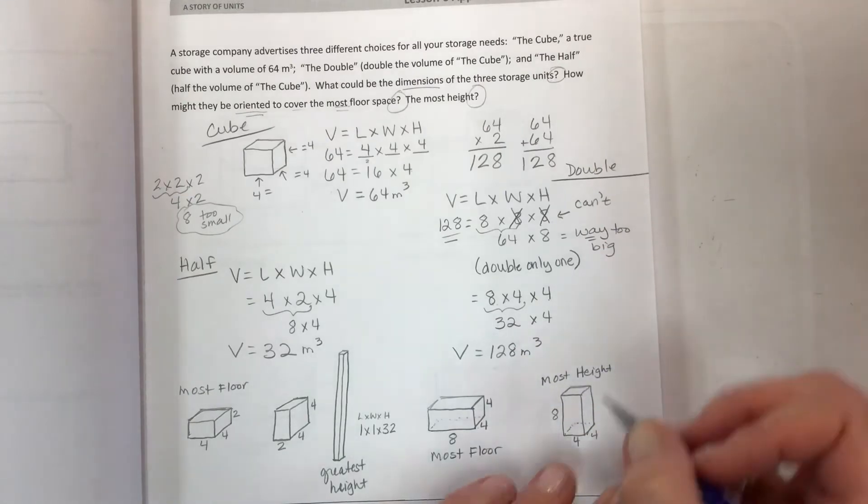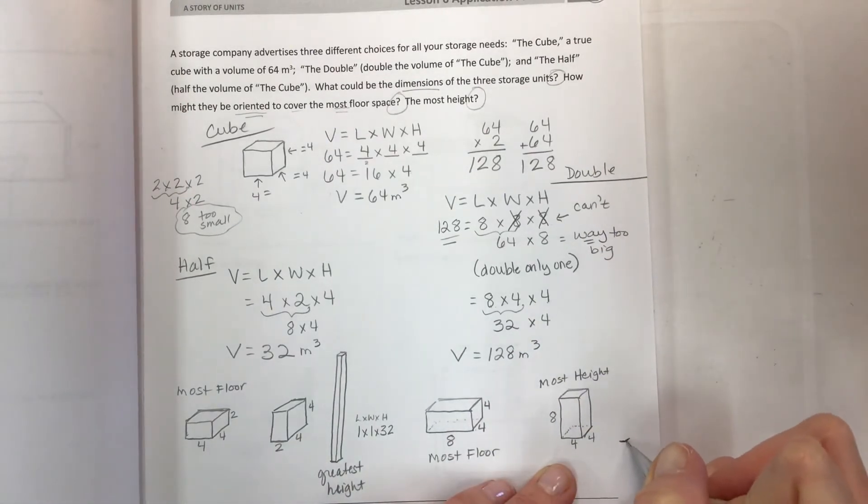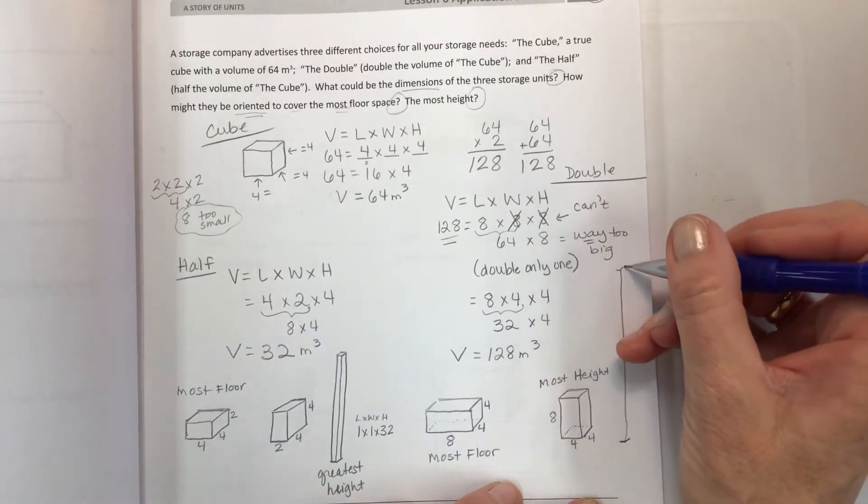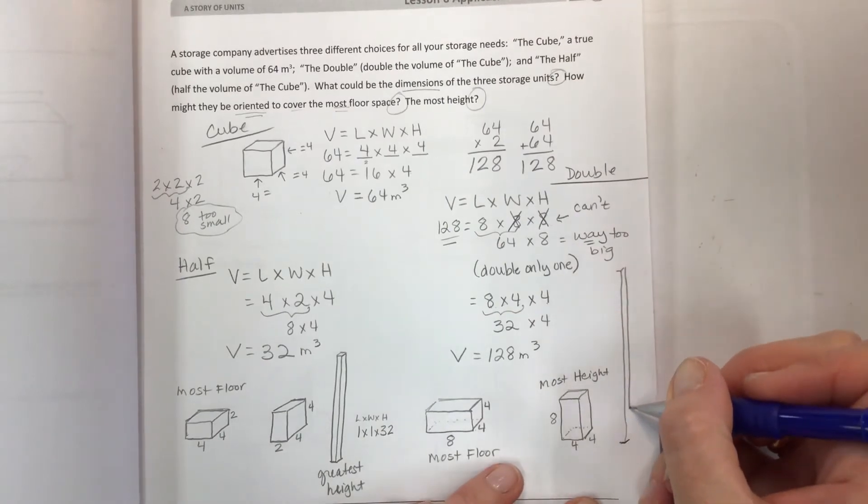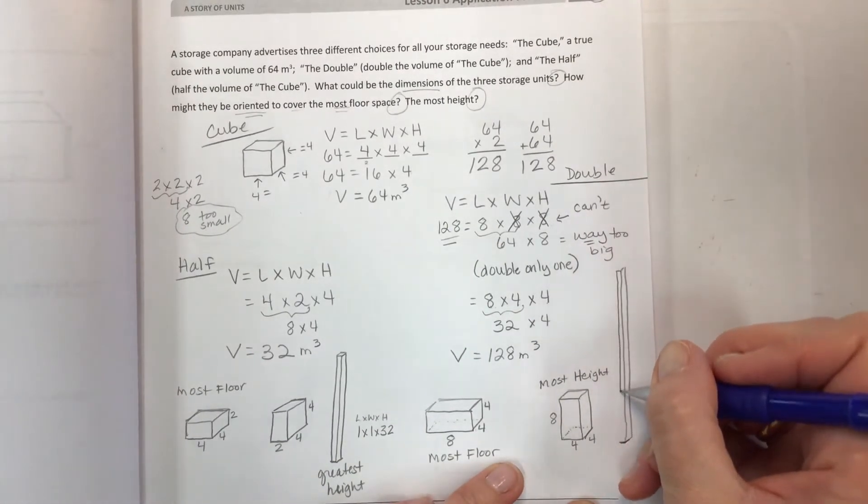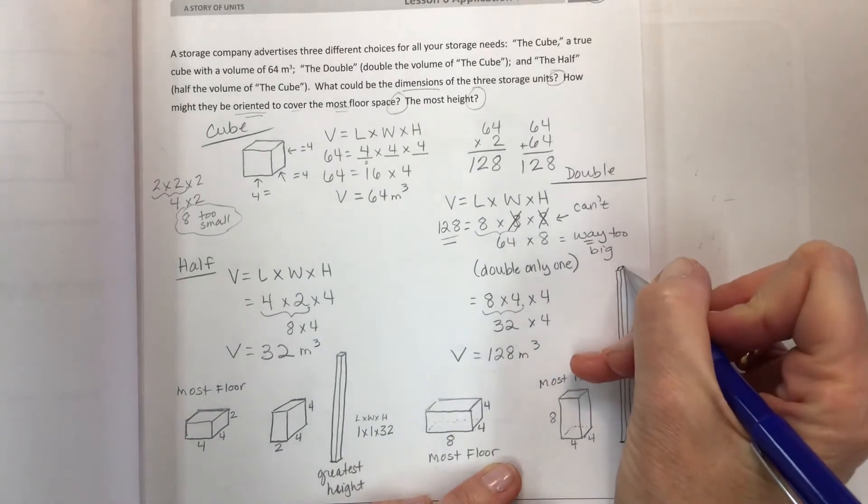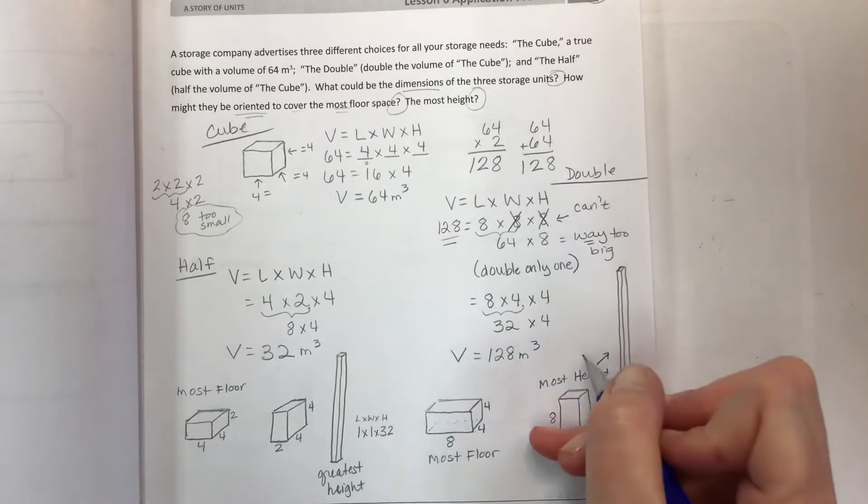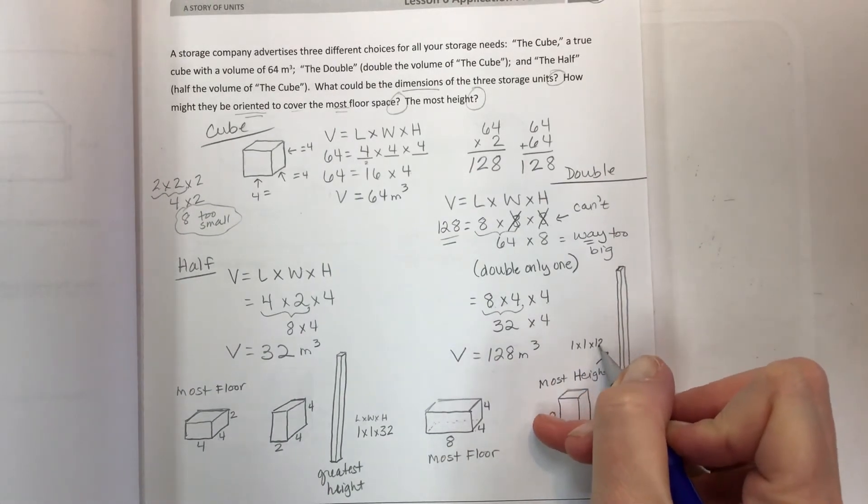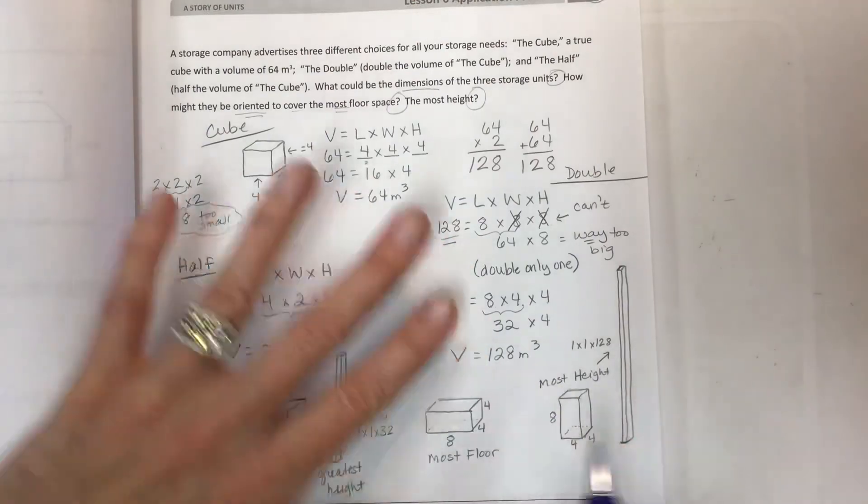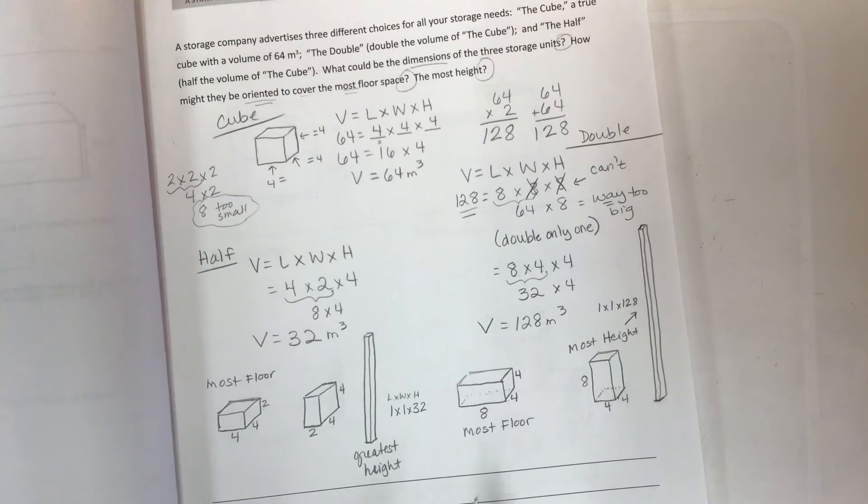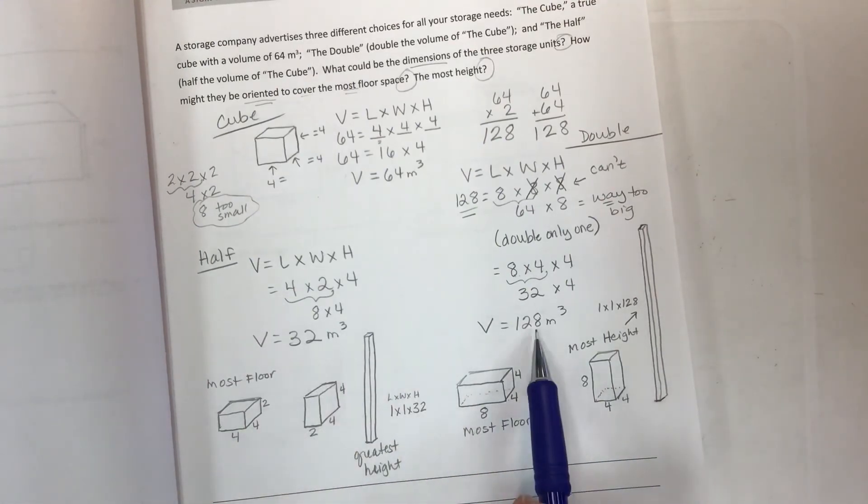Same thing with the crooked line - it's not to scale, but it gives you the idea that this would be the most height because it's 1 by 1 by 128. The greatest height is going to have a teeny tiny footprint on the bottom with 1 by 1, and then you use that total to give yourself increased height.